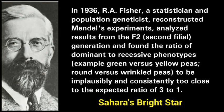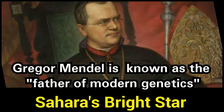In 1936, Ronald Fisher, a statistician and population geneticist, reconstructed Mendel's experiments and analyzed results from the F2 (second filial) generation. He found the ratio of dominant-to-recessive phenotypes — for example, green vs. yellow peas and round vs. wrinkled peas — to be implausibly and consistently too close to the expected ratio of 3 to 1. Gregor Mendel is known as the father of modern genetics.